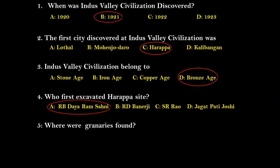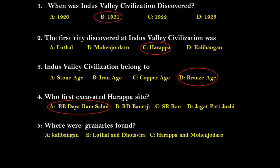Question five: Where were granaries found? Options are Kalibangan, Lothal, Dholavira, Harappa, and Mohenjo-Daro. The right answer is that granaries were found at two places — Harappa and Mohenjo-Daro.